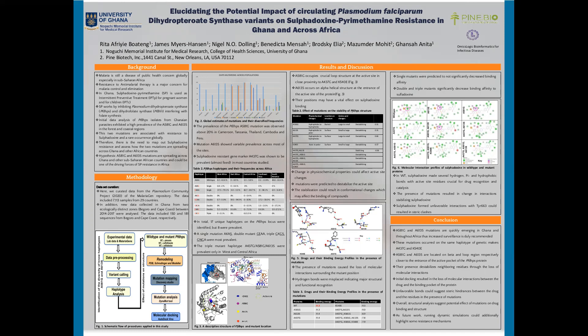Previous data from Plasmodium falciparum DHPS isolated from Ghanaian parasites highlighted a high prevalence of mutations at position 581 mutated to glycine and at position 613 mutated to serine in the forest and coastal regions of Ghana. Interestingly, these two mutations have been associated with resistance to sulfadoxine and exist as a rare occurrence globally. Therefore, in this study we sought to map sulfadoxine resistance and assess how these two mutations are spreading across Ghana and other African countries.